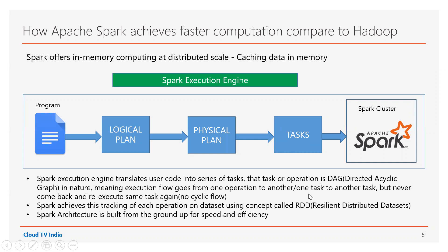It's not cyclic — it's acyclic. Spark achieves this tracking of each operation on the dataset using the concept of RDD. Internally, Spark actually works in the form of RDD even if you work on DataFrames — finally when it runs on a Spark cluster, it will run in the form of RDDs.